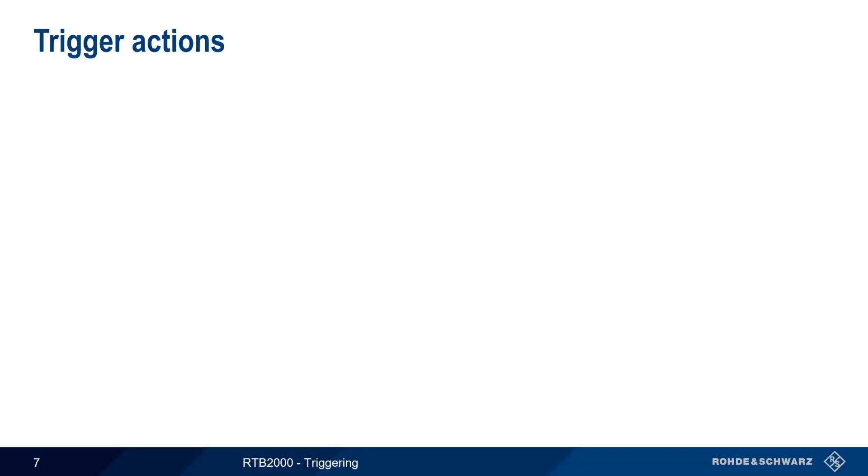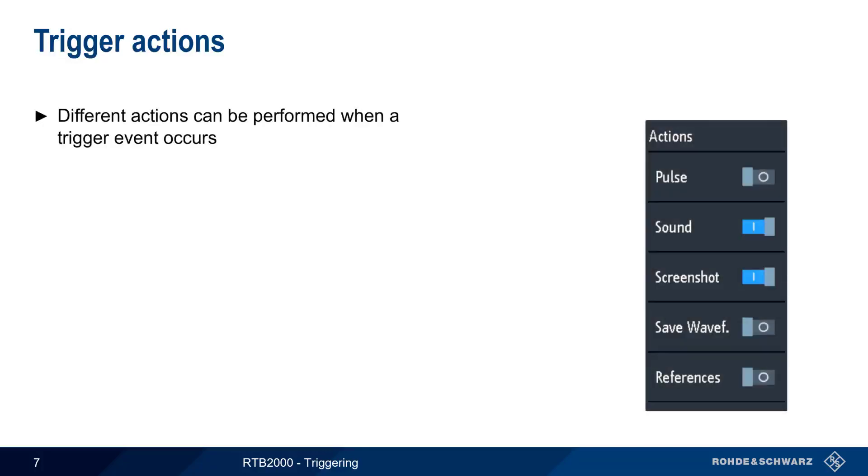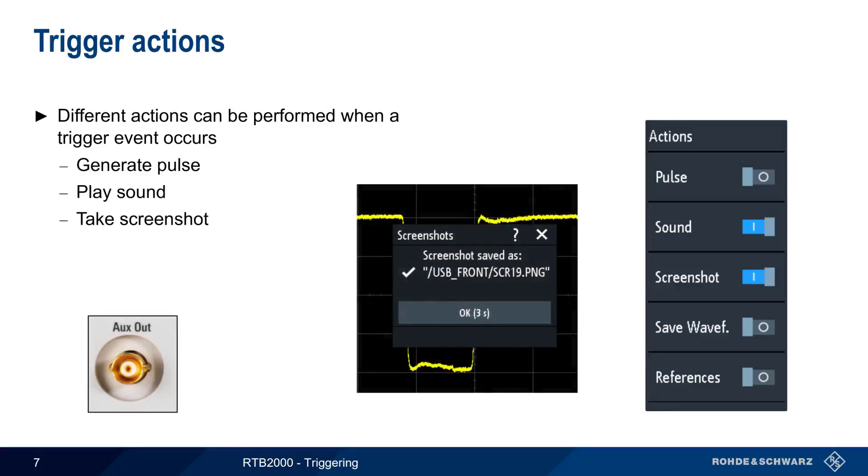The Setup menu is used to define which actions, if any, should be taken when a trigger event occurs. These include generating a pulse out on the aux out connector, playing a sound, taking a screenshot, saving the actual waveform data itself, or saving a reference waveform. These actions can also be combined. For example, the RTB could take a screenshot and play a sound when a trigger occurs.